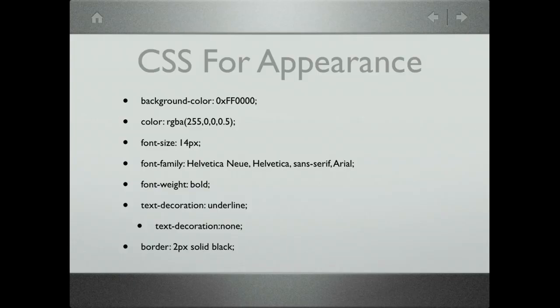Border takes three values: the first is thickness, the second is the style (solid, dashed, or in between), and the final one is the color. So 'border: 2px solid black' would give a black solid border with a thickness of 2 pixels.